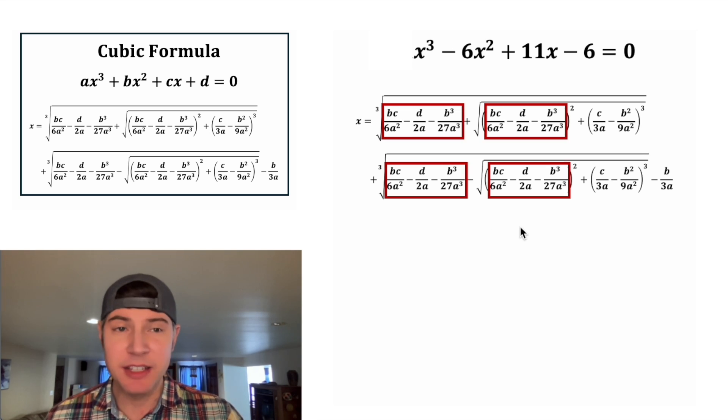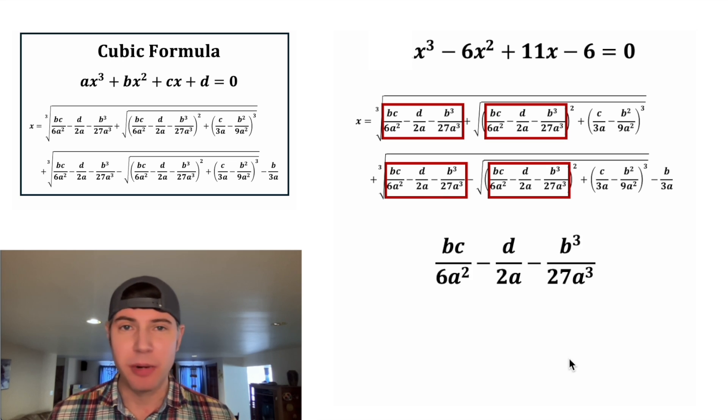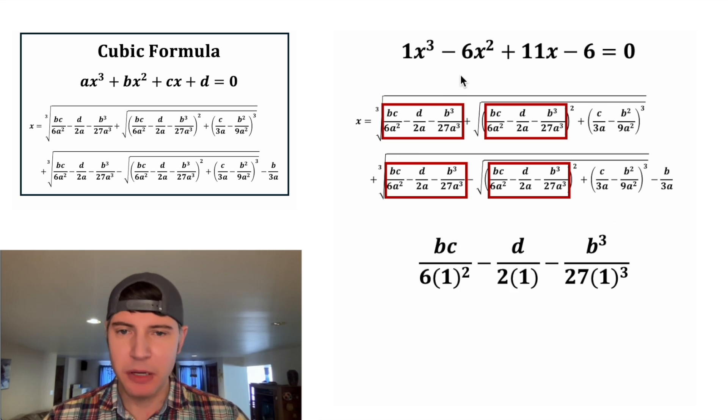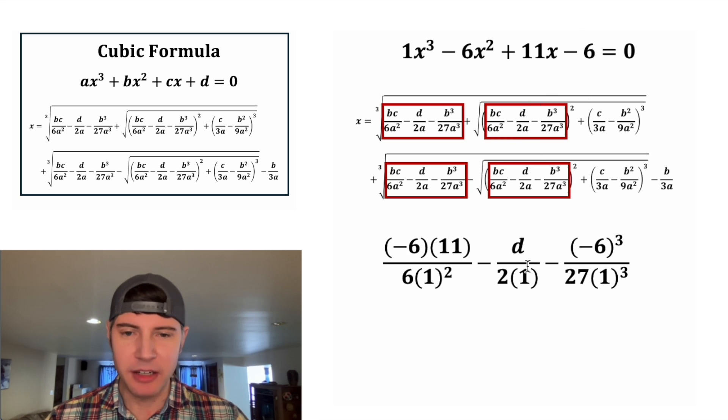The first thing I notice, inside of these red boxes is the exact same expression. So if we figure that out, we can just do a bunch of substitution. In the place of these A's, we can plug in 1. In the place of both of these B's, we can plug in negative 6. And then for this C, we can plug in positive 11. And for this D, we can plug in negative 6.